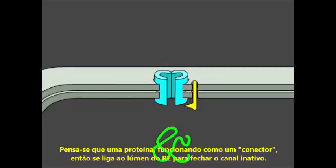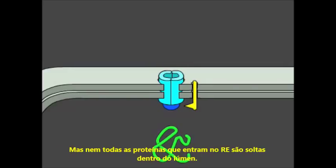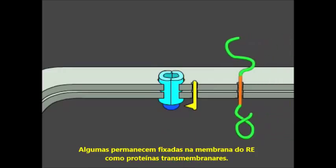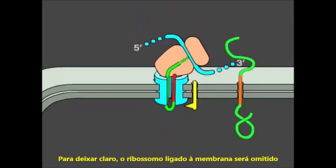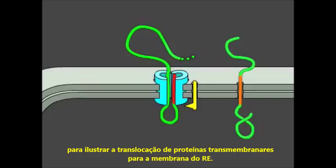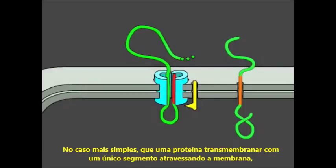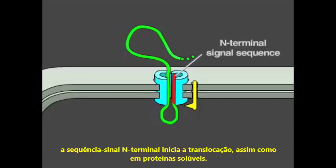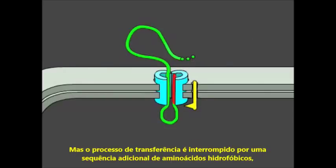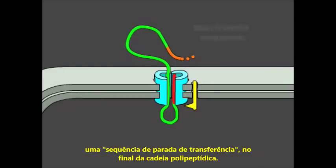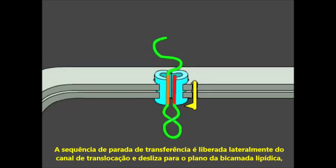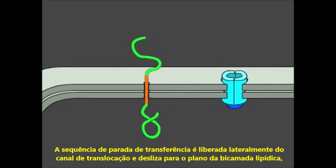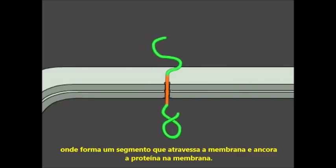The signal peptide is then released from the translocation channel into the membrane and rapidly degraded. It is thought that a protein serving as a plug then binds from the ER lumen to close the inactive channel. But not all proteins that enter the ER are released into the ER lumen — some remain embedded in the ER membrane as transmembrane proteins. In the simplest case, that of a transmembrane protein with a single membrane-spanning segment, the N-terminal signal sequence initiates translocation just as for a soluble protein. But the transfer process is halted by an additional sequence of hydrophobic amino acids, a stop-transfer sequence further in the polypeptide chain. The stop-transfer sequence is released laterally from the translocation channel and drifts into the plane of the lipid bilayer, where it forms a membrane-spanning segment that anchors the protein in the membrane.